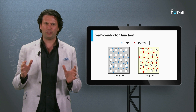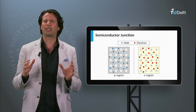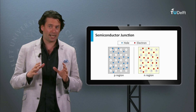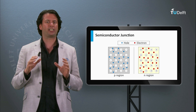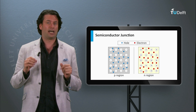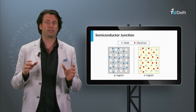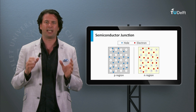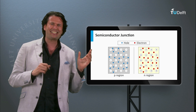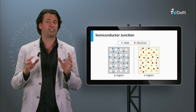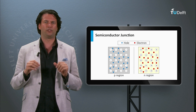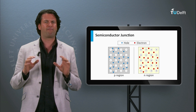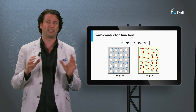We have introduced the fact that semiconductors can be doped — n-type and p-type. In the n-type material, the majority charge carriers are electrons, and the doping atoms that donated an electron are fixed positively charged in the network. In a p-type material, the majority charge carriers are holes, and the doping atoms that accepted an electron are fixed negative charges in the network.